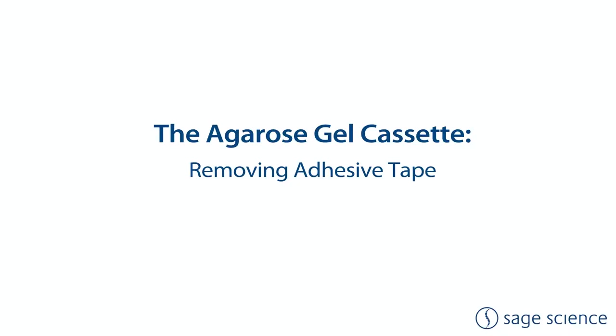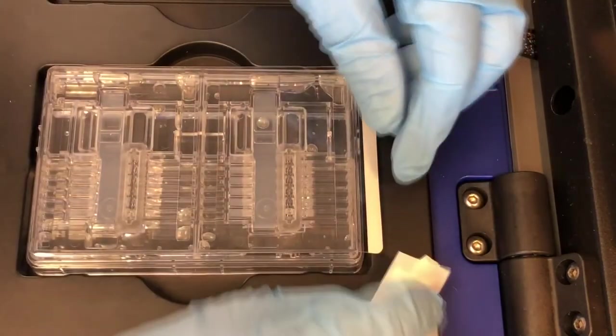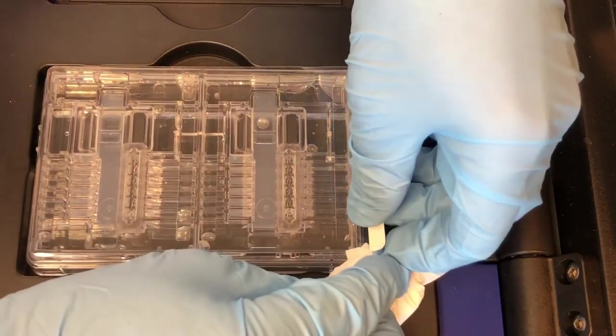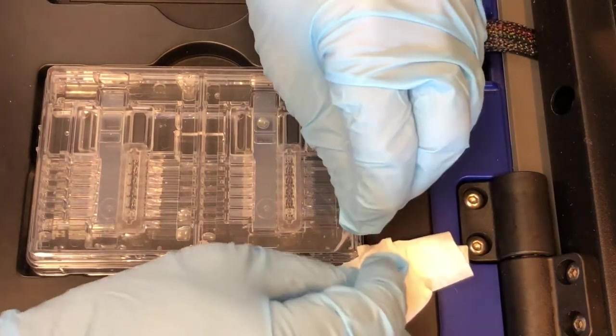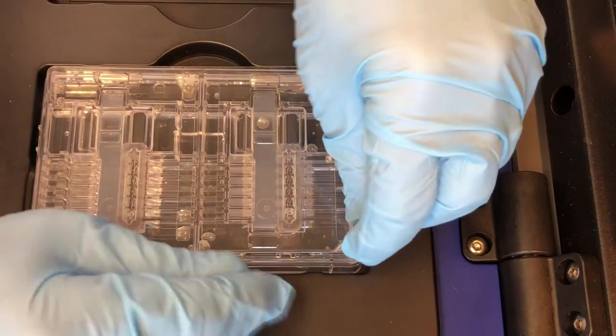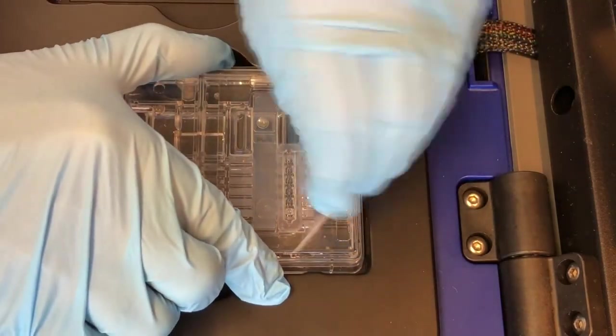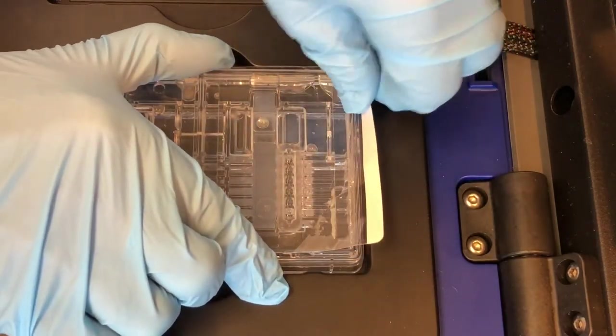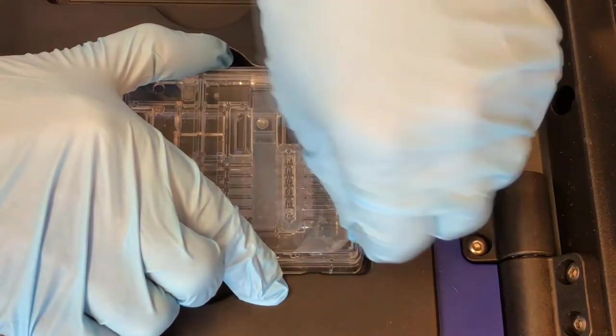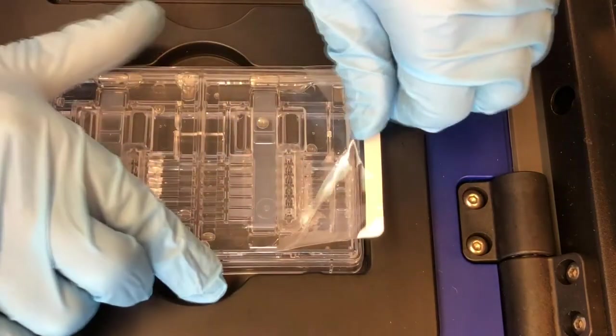Place the cassettes onto the instrument nest. Care must be taken to remove the adhesive tape. It is good to have a kimwipe at the point where the buffer chamber is first exposed, since during shipping the air pressure inside the cassette can cause some buffer to be ejected. The tape is quite sticky.